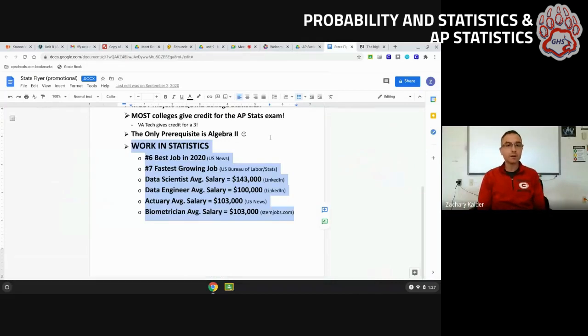Highlighted here, work in statistics, the number six best job in 2020 according to U.S. News, the number seven fastest growing job according to the U.S. Bureau of Labor and Statistics. I listed four jobs there that require statistics, all of them six figures or more. These jobs are in high demand and pay you lots of money.